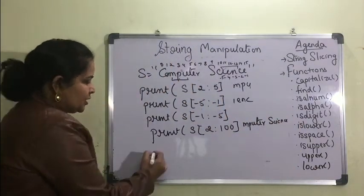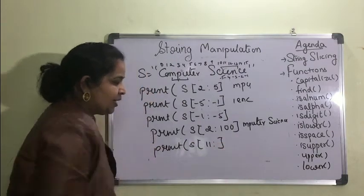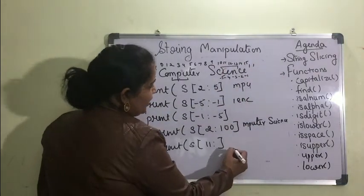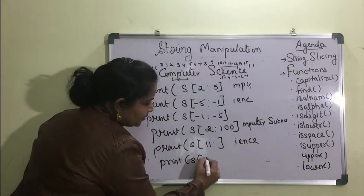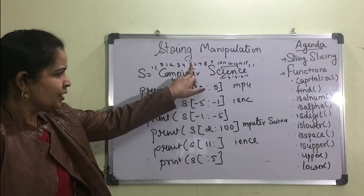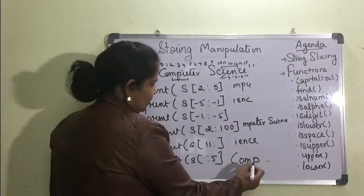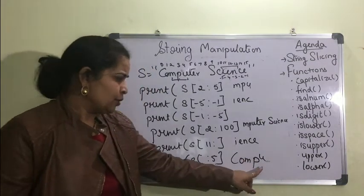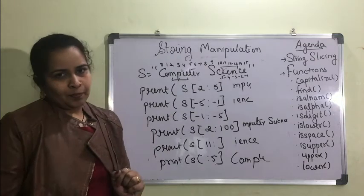In that case it will print from index 2 to the last character. If you write s[11:] without an upper limit, it starts from index 11 and prints till the end. If you omit the lower limit and write only the upper limit, like s[:5], it prints from the beginning up to index 4 (since 5 is exclusive).